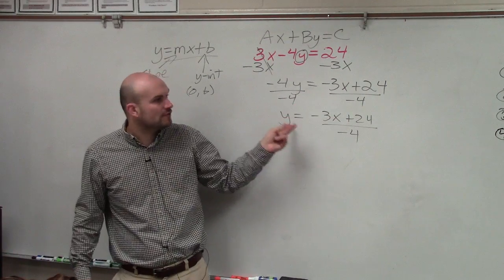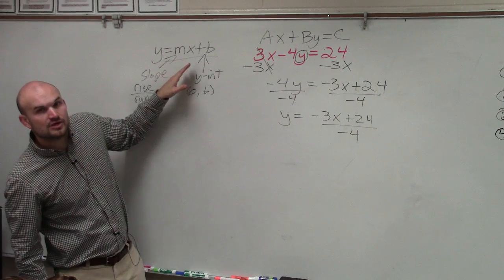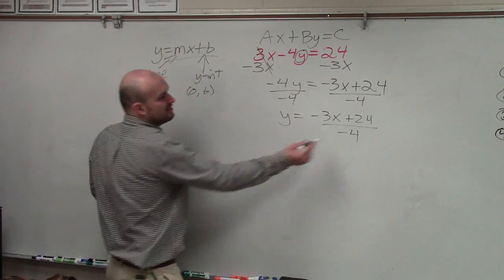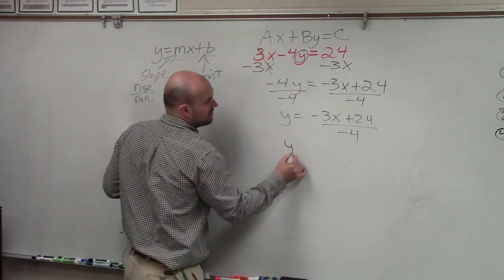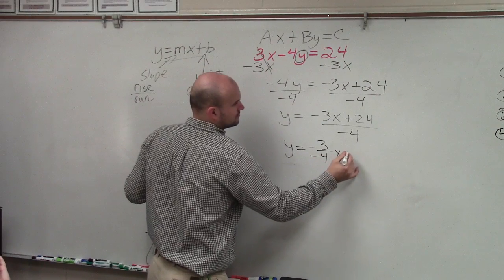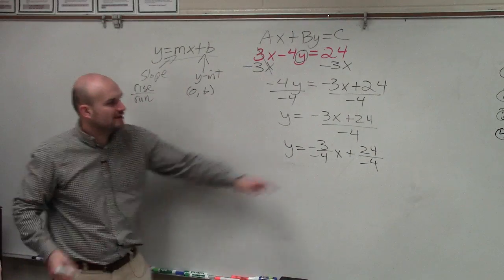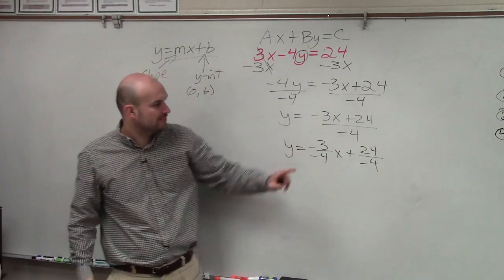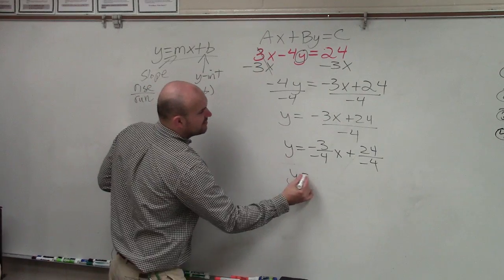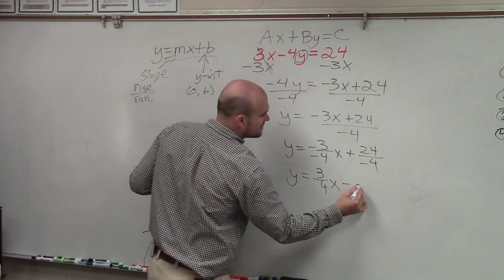That's good. You solved for y. However, again, we're trying to put it in this format. So when looking into this format, I need to divide the negative 4 into both of my terms. Because that negative 4 needs to divide into both of them. So therefore, now I can simplify this into a positive 3 fourths x minus 6.